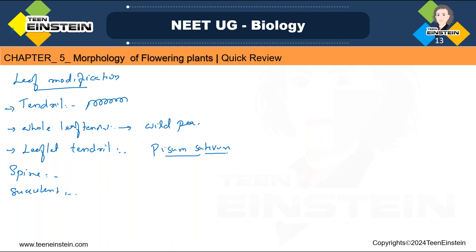Insect-catching leaves — these leaves catch insects and absorb their nitrogen to fulfill the plant's nitrogen requirement, and may also be used for storage. Pitcher plant — leaves modified into pitchers to catch and digest insects. Example: Nepenthes. Bladder — leaf segments form a bladder acting as a trap for insects.